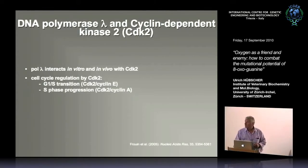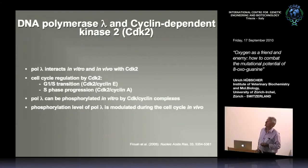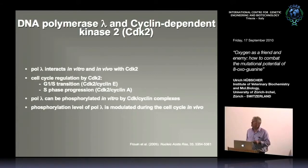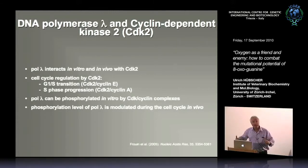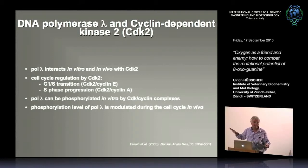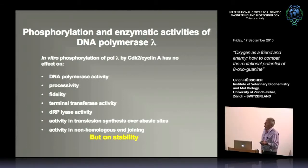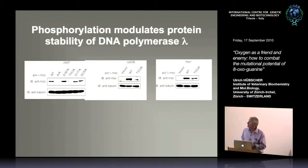We assumed there is a cell cycle effect on pol lambda. The hypothesis is clear: during or shortly after replication, this repair event removes the frequently incorporated A opposite 8-oxoG. Ursula spent a year finding that when the protein cannot be phosphorylated, it has different stability — the non-phosphorylatable mutant has reduced protein levels in 293T cells and osteosarcoma cells, while mRNA levels detected by RT-PCR are normal. Both polymerases are active, so it's not a folding issue.